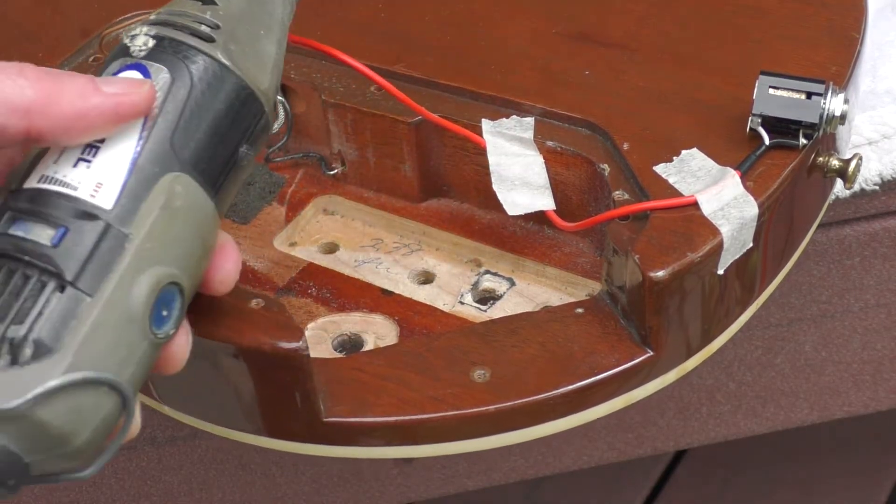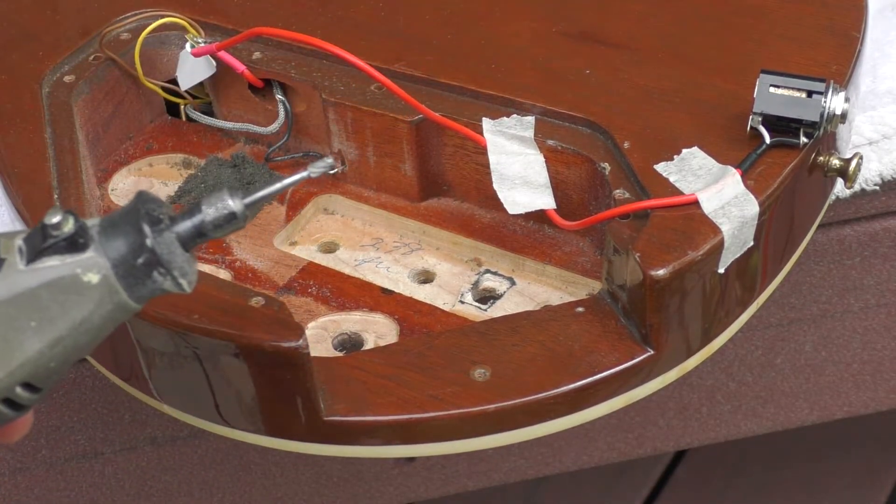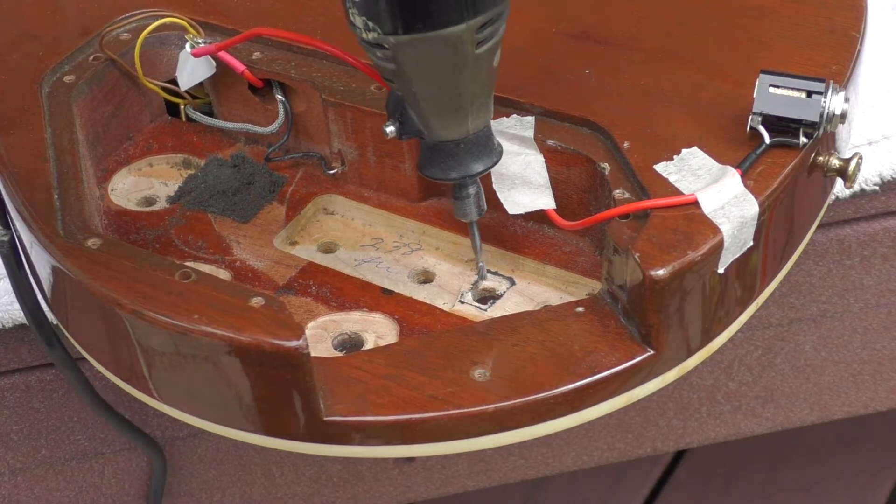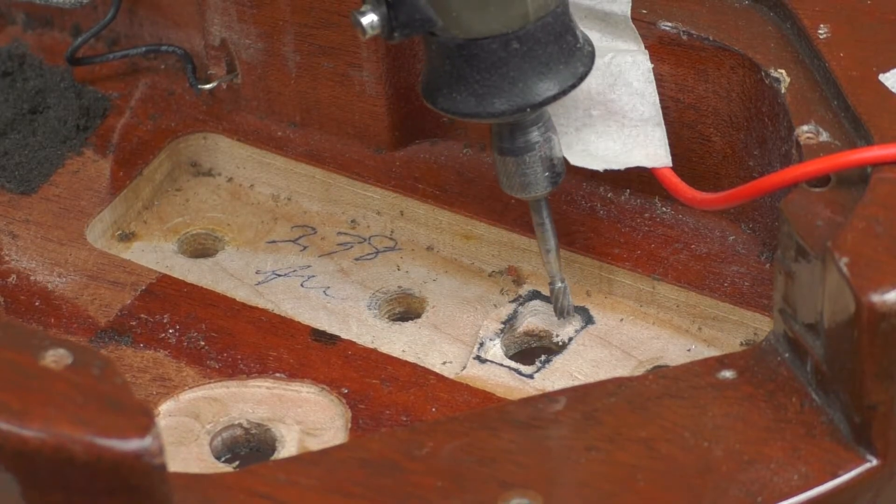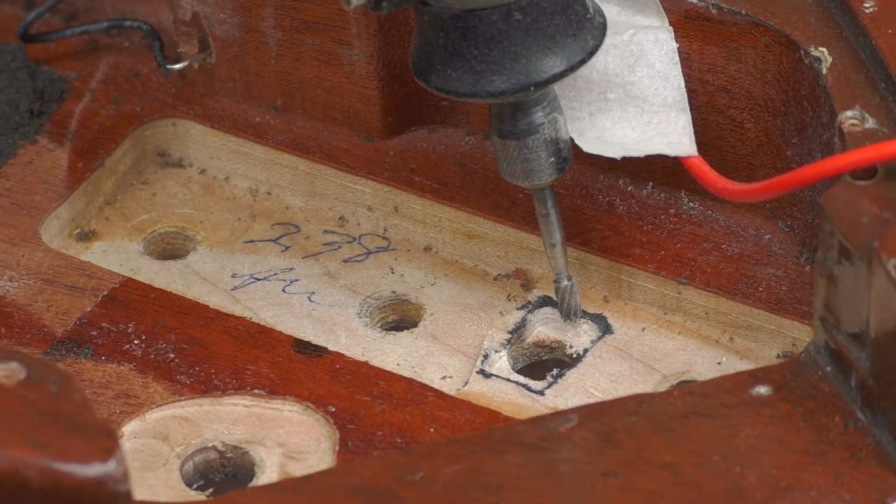I used just a standard old Dremel tool I have with the routing tool on it, just working it inside there right around the edges just a little bit at a time to make a difference as far as getting that mode switch to stay in place.